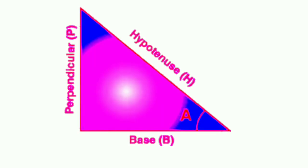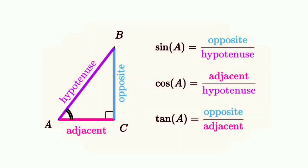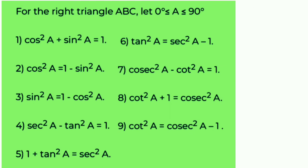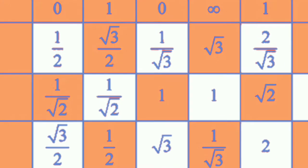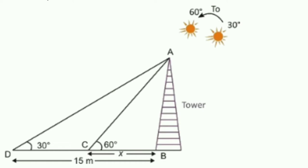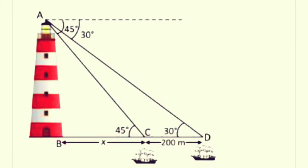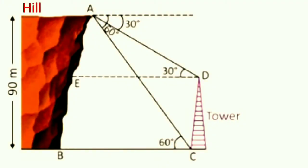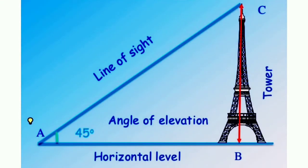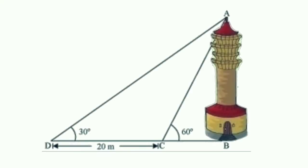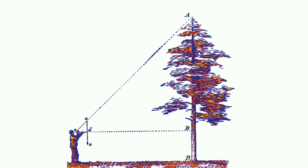Namaskar. In our previous video we studied about trigonometric ratios and identities. Today we'll see and study some ways in which trigonometry is used in the life around us. Trigonometry is one of the most ancient subjects studied by scholars all over the world. It was invented because its need arose in astronomy. Here today we shall see how trigonometry is used for finding the heights and distances of various objects without actually measuring them.